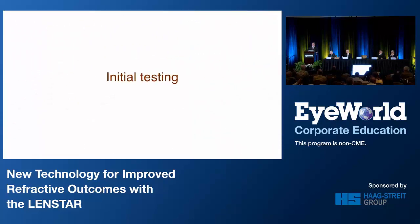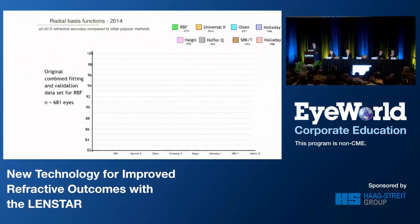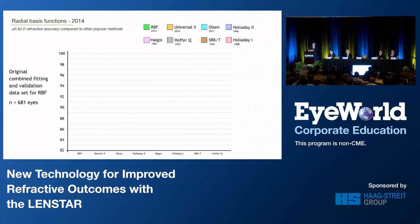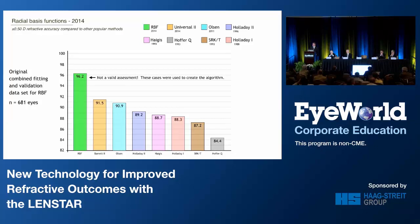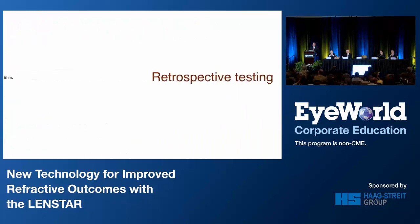Some of the initial testing was pretty exciting. This is our first 681 cases, and we found we did a really good job. But this may not be an entirely accurate method of testing because 80% of these cases were actually used to make the algorithm — so that's not exactly valid. You can see that compared to the others we were doing a good job, but the formula had seen these cases when it was used to create itself, so this probably isn't fully accurate.